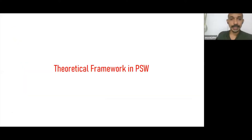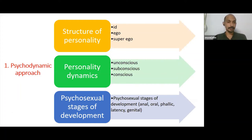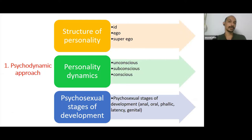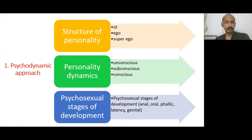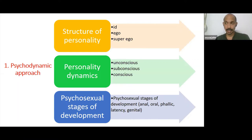We begin with the psychodynamic theories or psychodynamic approach — one of the prominent and initial theories that started interpreting mental health issues. Professional social work also adopted this theoretical perspective. Psychodynamic theory was proposed by Sigmund Freud. They talk about the id, ego, superego, the unconscious, subconscious and conscious mind, psychosexual stages of development, and defense mechanisms. These are the basic concepts. What are they and what is their relevance? Let me talk about that.